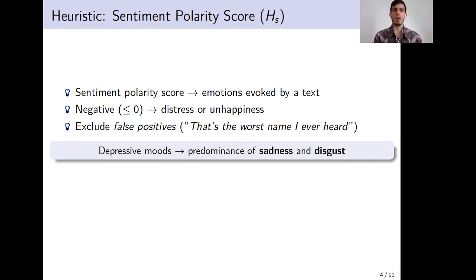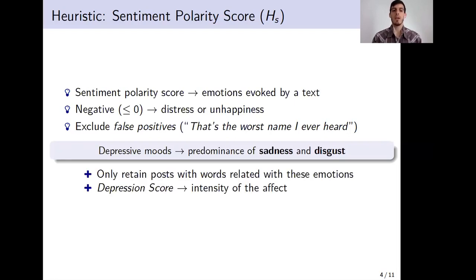To do so, we're going to be based on psychology literature, which states that depressive moods are characterized by the predominance of sadness and disgust. Using this knowledge, we're only going to keep all those posts which contain words related with these two emotions, with at least one of these two emotions. And moreover, we're going to compute a depression score based on the intensity that those words have for that emotion.